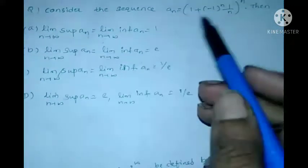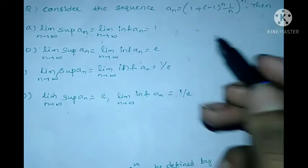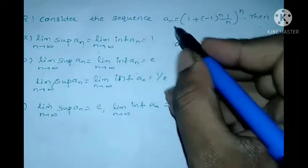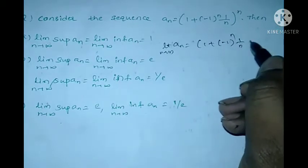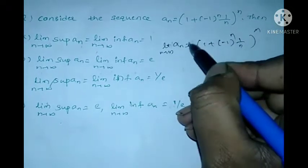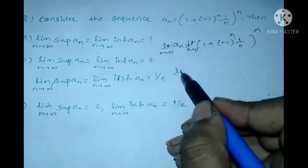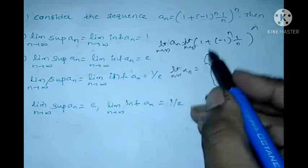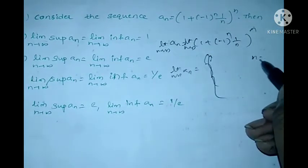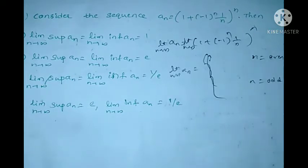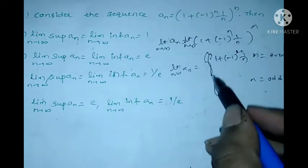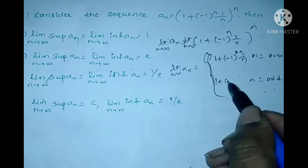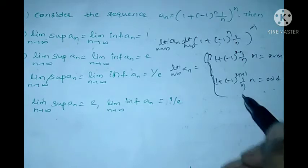This is one of the most important problems; these types of problems are usually asked in KSET examinations. So a_n = (1 + (-1)^n / n)^n. To find the limit, we take n even and n odd separately. If n is even, we get (1 + 1/n)^n, and if n is odd, we get (1 - 1/n)^n.